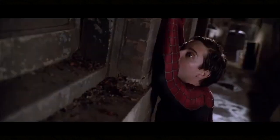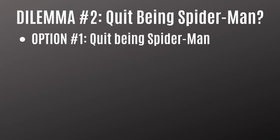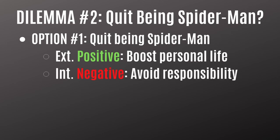Let's take a look at Spider-Man 2, the Tobey Maguire one. In the middle of the movie there's that alley scene where Spider-Man falls between two buildings because he's struggling with his spider powers and with being Peter Parker. He has to decide: do I want to stop being Spider-Man or continue? His first option is to stop. The external outcome would be positive because he'd be preserving his mental health, pursuing his studies, and pursuing Mary Jane. The internal outcome, however, is negative because he'd be avoiding his responsibility and could feel guilty about endangering the people of New York City who have relied on him.